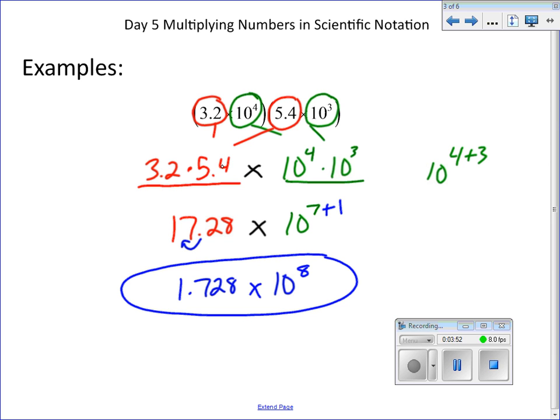Okay, so again, what we did, we regrouped. We used our rule for multiplication, which told us we can add, because these two numbers are being multiplied by each other. And then we put it back in scientific notation and called it good.